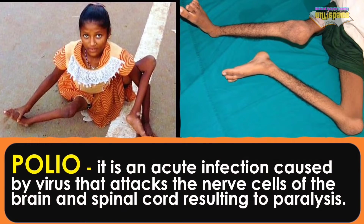Polio is an acute infection caused by a virus that attacks the nerve cells of the brain and spinal cord, resulting in paralysis.